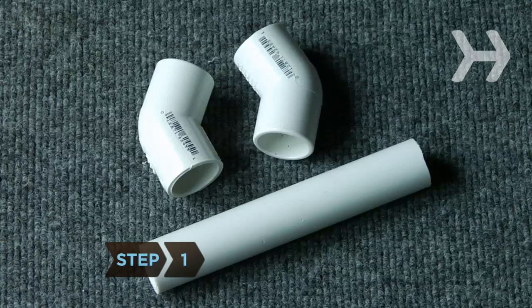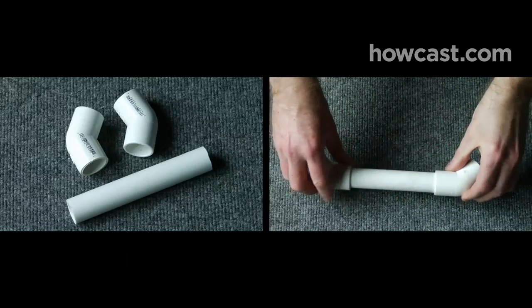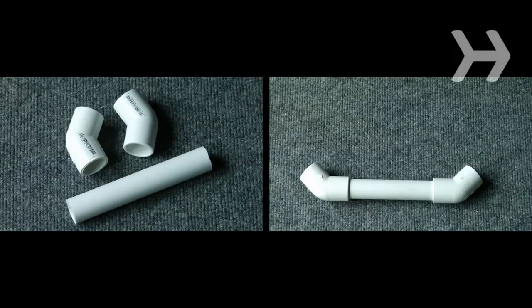Step 1. Attach two 45-degree elbow connectors to either end of a 6-inch PVC pipe. This will be the bottom of your camcorder stabilizer.